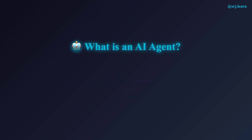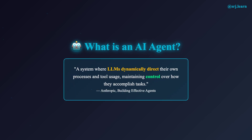What exactly is an agent? If you search online, you'll find dozens of different definitions — even asking ChatGPT multiple times might give you different answers. For this series, we'll use Anthropic's definition: an agent is a system where large language models dynamically direct their own processes and tool usage, maintaining control over how they accomplish tasks. The key word here is dynamically.